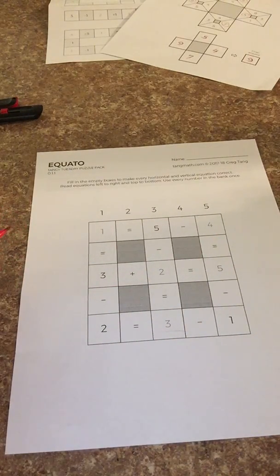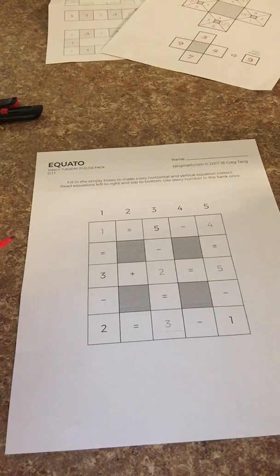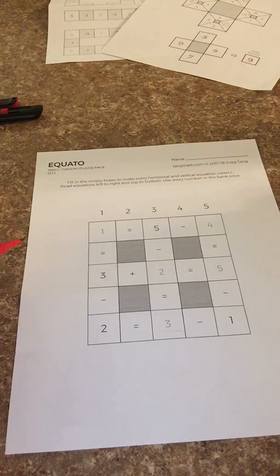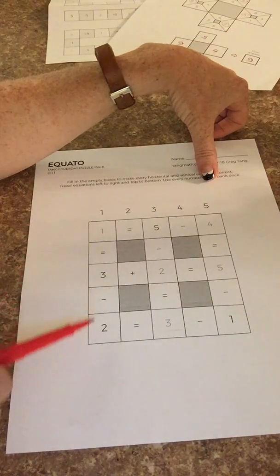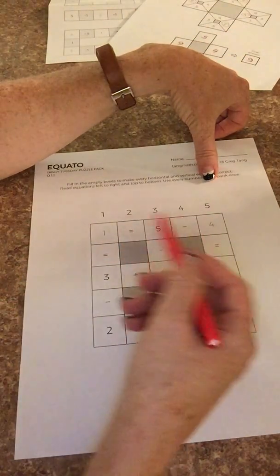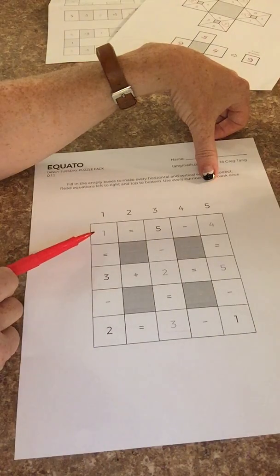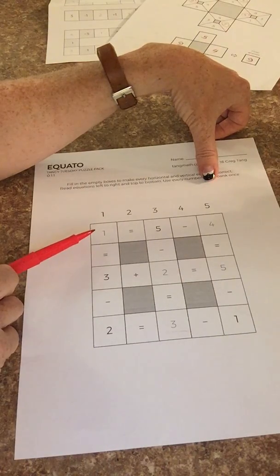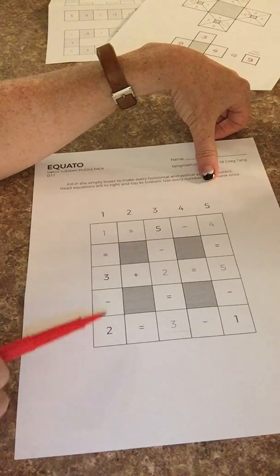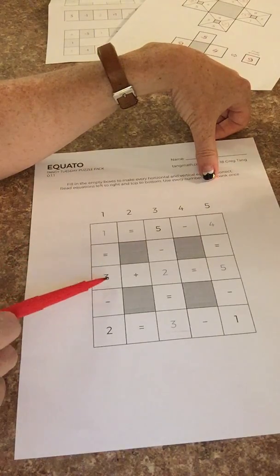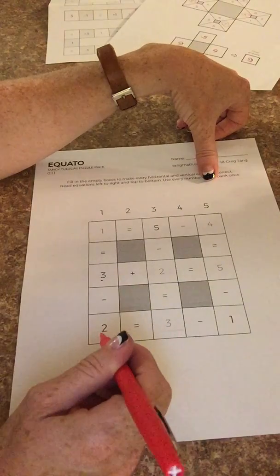So the trickiest part in Equato when we do it in the classroom is trying to find a place to start. Just kind of scan it, you might need to help your kids scan it. If you notice this says, and originally without the answer there it would have been blank equals three minus two.